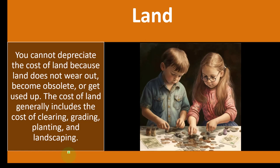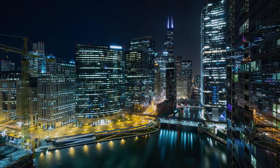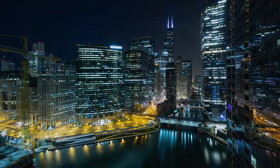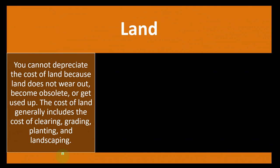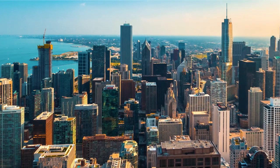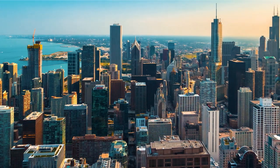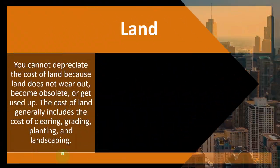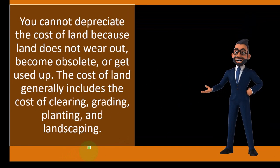You get into the issue of what is land versus building. If you bought a piece of land with a building on it and you plan on using the building, you're going to have to allocate between the land and the building. But if you plan on just clearing the building off the land — you bought the land for the land and there happened to be a building on it — then tearing down the building might be considered part of the cost of the land.